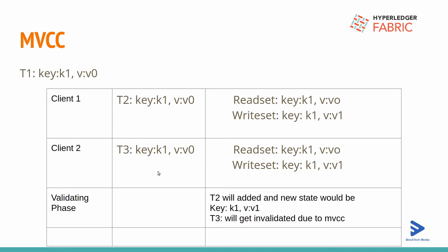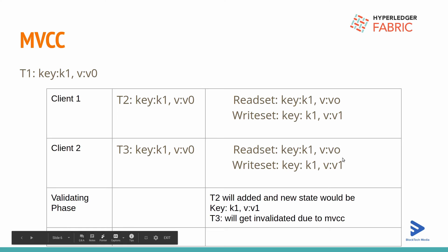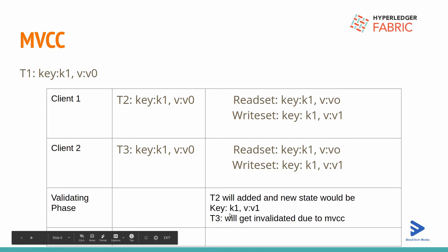When both clients send their transactions to the orderer, the orderer does not inspect any content of the transactions and sends them to the committing peers. Let's assume T2 and T3 are sent at the same time, so they get added into the same block. The committing peer validates the transactions, and at the time of MVCC, T2 will get added correctly because the state database has key1 at version V0 and the new version is V1, which is valid.